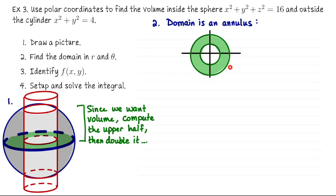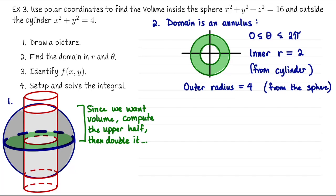The easiest variable to immediately describe is theta. We have one full revolution so theta is going to go from 0 to 2π when we set up our bounds of integration. And then let's see the inner radius is coming from the cylinder. The cylinder had a radius of 2. And then the outer radius is the same as the radius of the sphere. The sphere had a radius of 4. So the bounds on r are also pretty simple, they're 2 to 4.